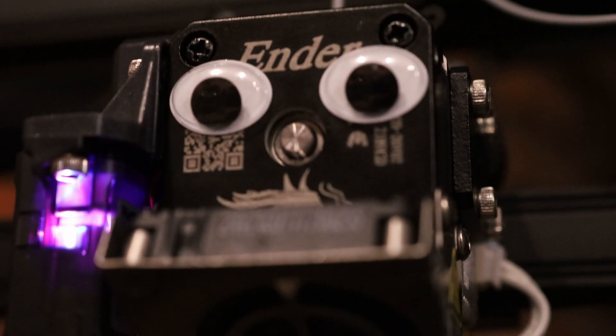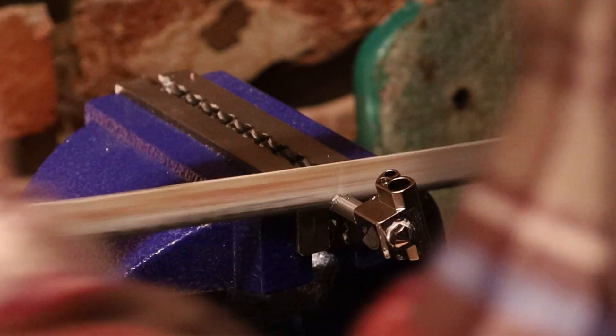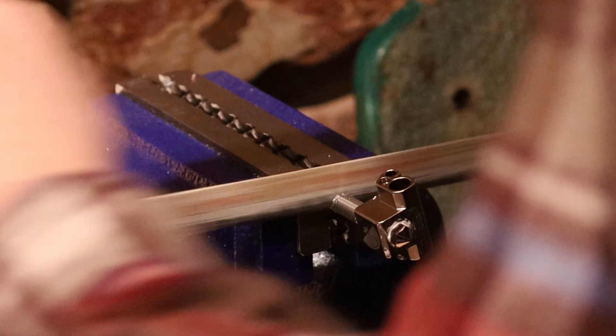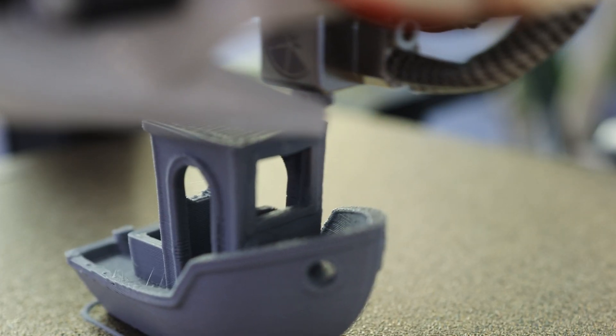I just bought this Ender 3S1. It's an outstanding printer, but it has one glaring flaw: the PTFE-lined hotend. In this video, I'm going to show you how to make your own all-metal heat brake. On top of that, I'll be installing a CHT nozzle and doing some flow rate tests. I'm not exaggerating when I say this printer is fast.